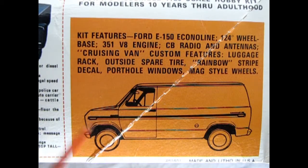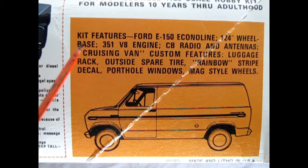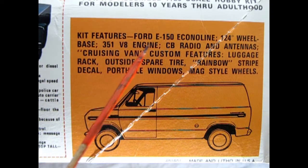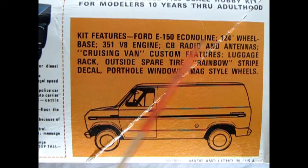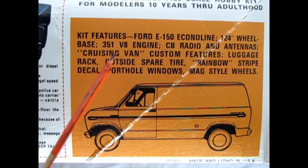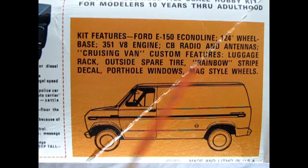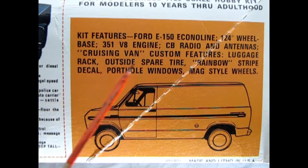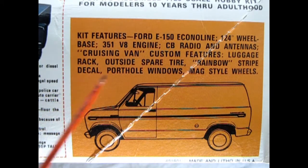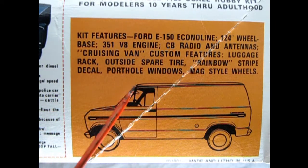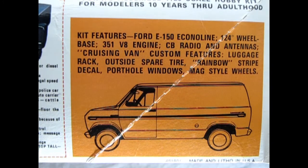Finally we have this side view illustration which says that the kit features are a Ford E-150 Econoline, 124 inch wheelbase, 351 V8 engine, CB radio and antennas, cruising van custom features, luggage rack, outside spare tire, rainbow stripe decal, porthole windows and mag style wheels.